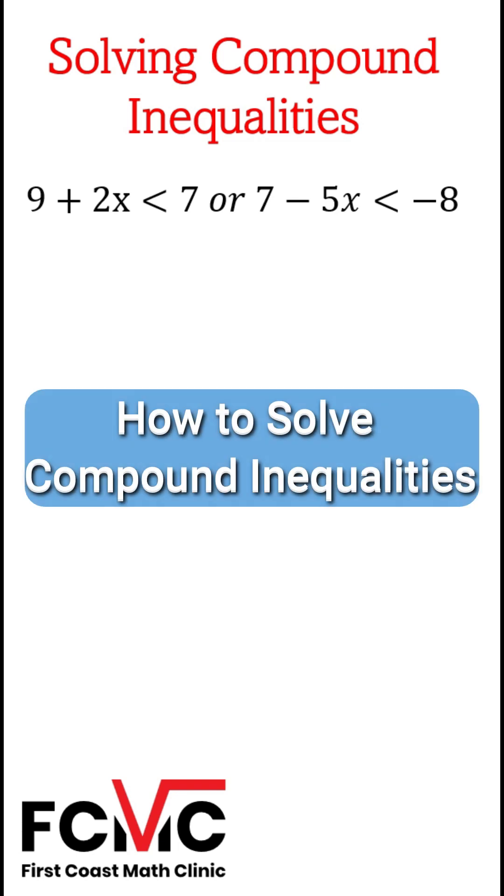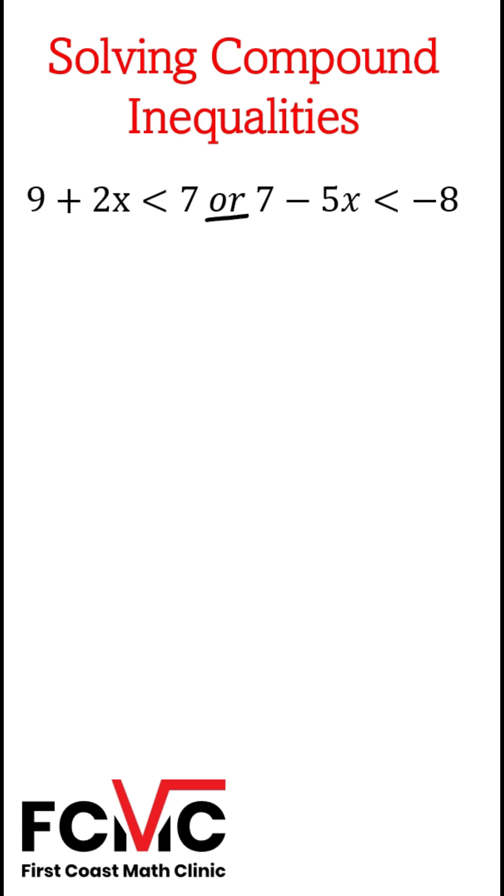How do we solve compound inequality? So here we've got a compound inequality with an or statement, 9 plus 2x is less than 7, or 7 minus 5x is less than negative 8.